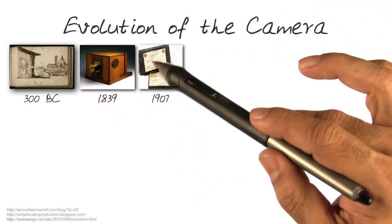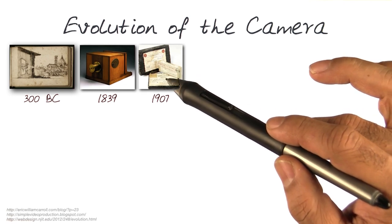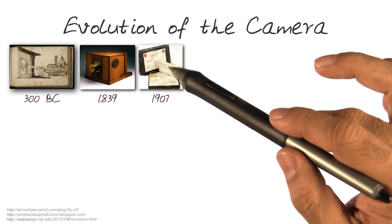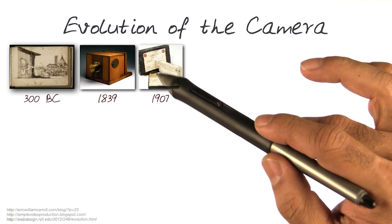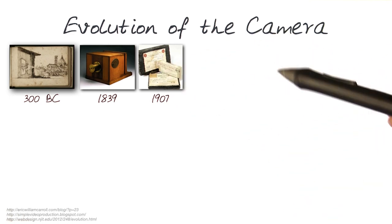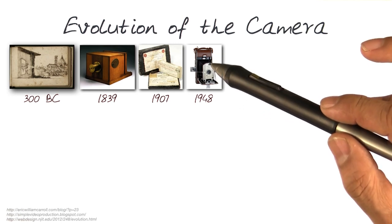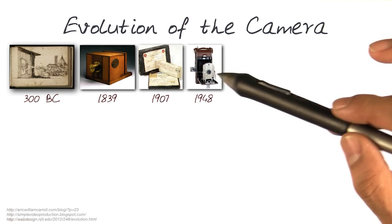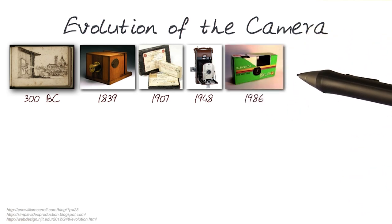Then came various types of processes where you could save those images onto print forms, and these are various types of printing mechanisms that started in the early 1900s. 1948 is where we started getting more compact representations, and 1986 is where we start seeing examples of disposable cameras.